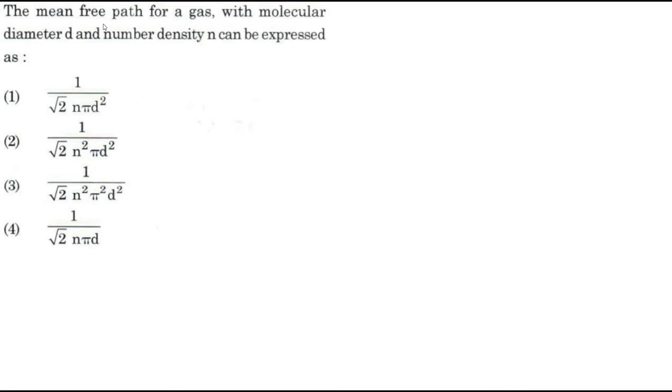Question is this. The mean free path for a gas with molecular diameter D and number density N can be expressed as option 1. Four options are given.